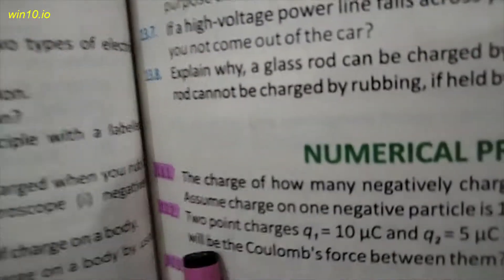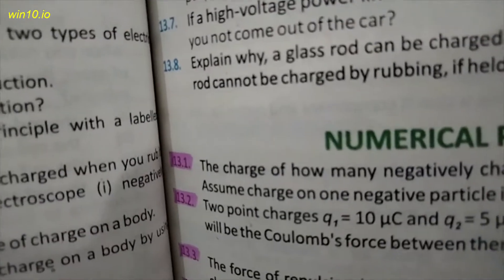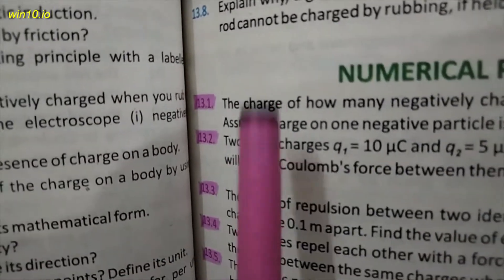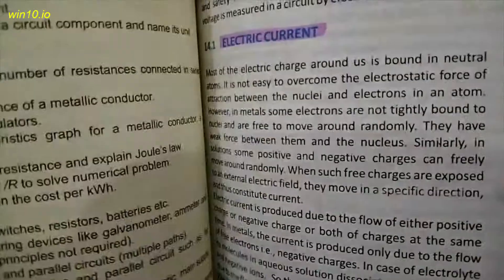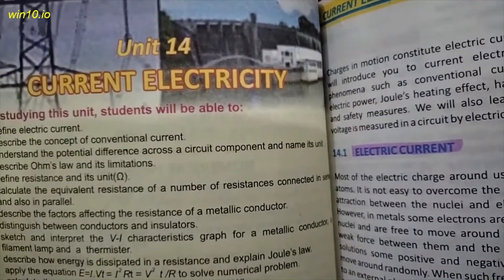Numericals 13.1, 2, 3, 4, 5, 6, 7, 8, 9, 10. I will do everything. You have to do everything. Unit number 14.